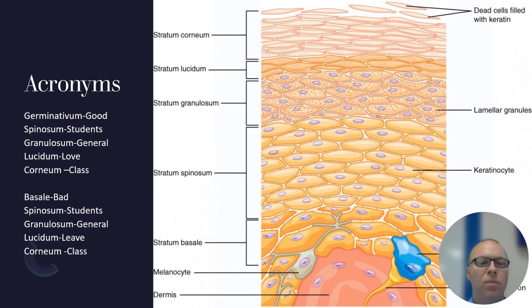Now a nice acronym to help you remember these layers in order, once again the germinativum, the spinosum, granulosum, lucidum, and corneum, is that good students generally love class. Well, how on earth am I going to remember the basale then? You know, so a way to remember basale, spinosum, granulosum, lucidum, and corneum is that bad students generally leave class. So hopefully that helps.